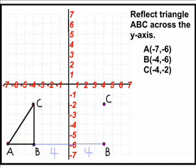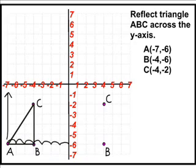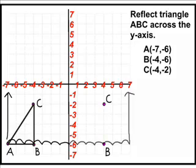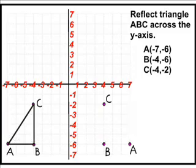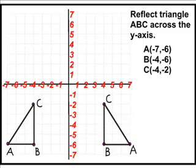Take a look at point A. Point A is located 7 units to the left of the y-axis, so let's simply move it 7 units to the right of the y-axis. And we have found the three new locations of points A, B, and C to reflect the triangle across the y-axis.